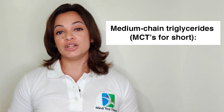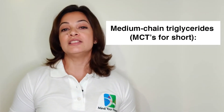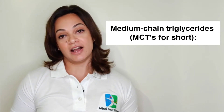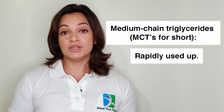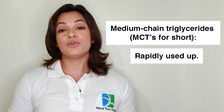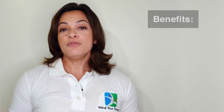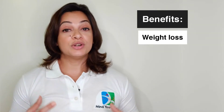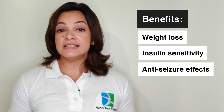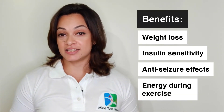The fourth type is MCTs, or medium-chain triglycerides. These are used differently in the body than any other fat — they are more easily absorbed and transported straight to the liver, where they are rapidly used up. Some of the benefits include weight loss, increased insulin sensitivity, and anti-seizure effects, especially in epileptic patients on a ketogenic diet.